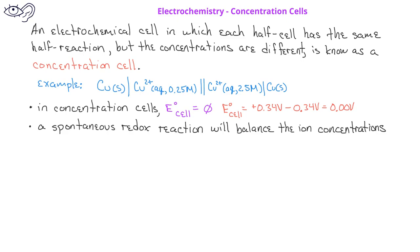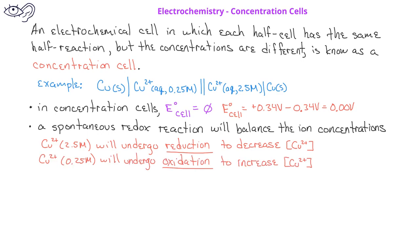This will happen in such a way that the half cell with a larger ion concentration will undergo reduction to decrease the ion concentration, and the half cell with a smaller ion concentration will undergo oxidation to increase the ion concentration.